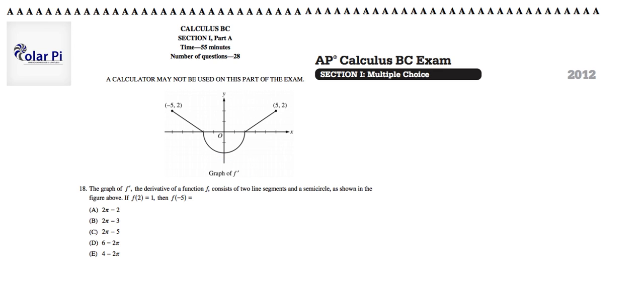In 18 it says the graph of f prime, pay attention to these things, so the derivative of f, consists of two line segments and a semicircle—this line segment and that line segment and that semicircle. As shown in the figure above, if f of 2 is equal to 1, f of negative 5 equals what?